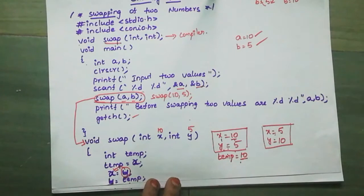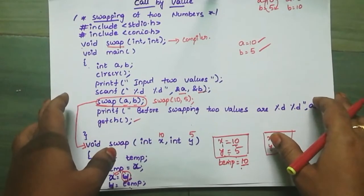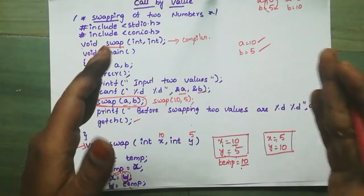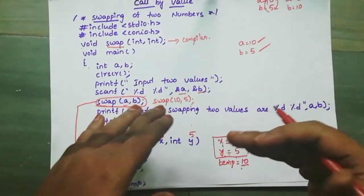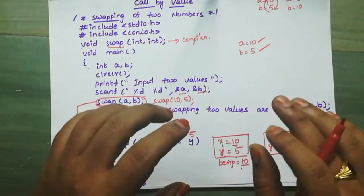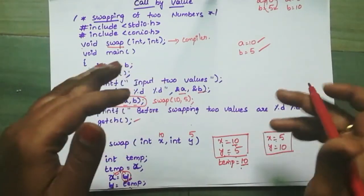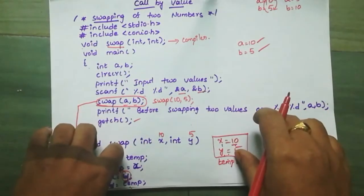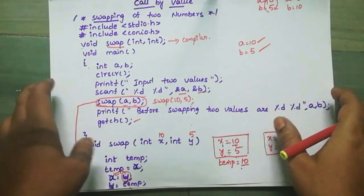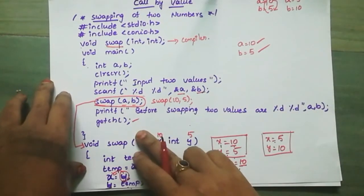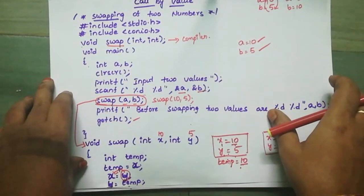The end of the program uses getch. When we do the compilation and execution, press Alt+F5 to see the output. Check your practice and verify the result. Thank you.